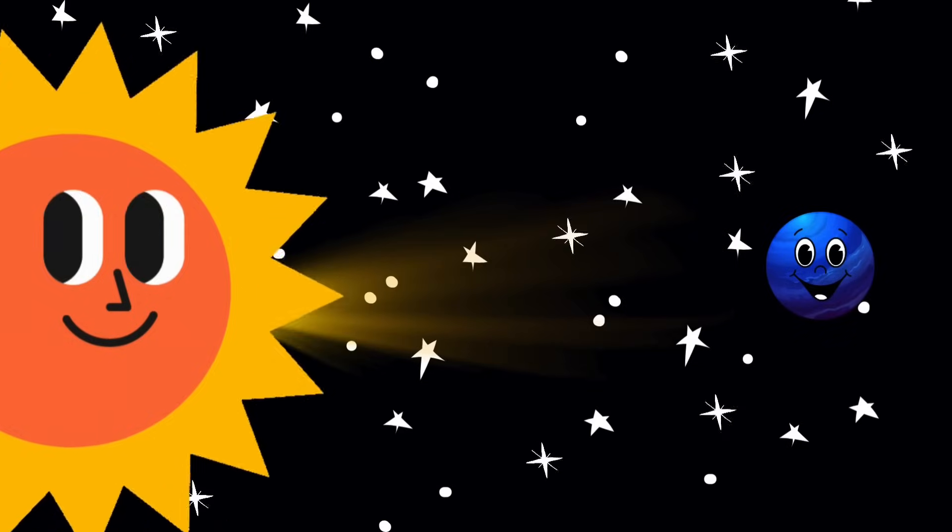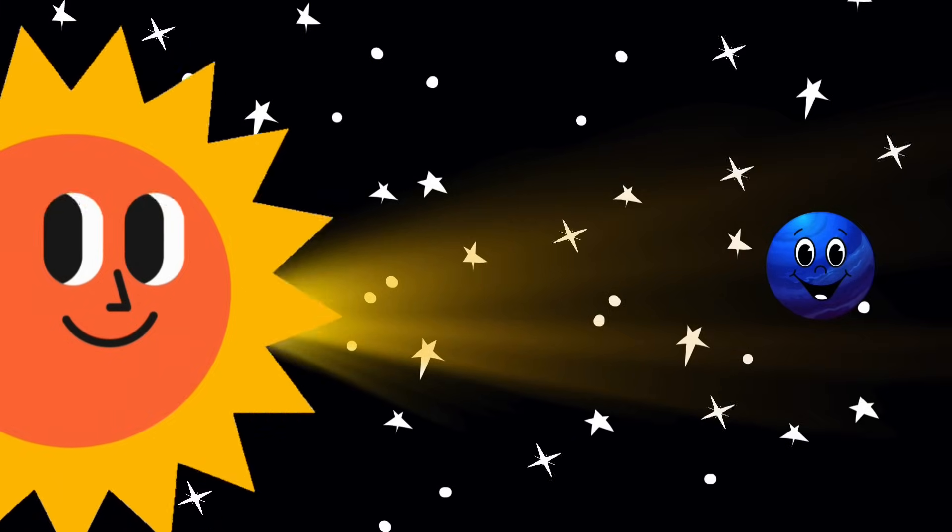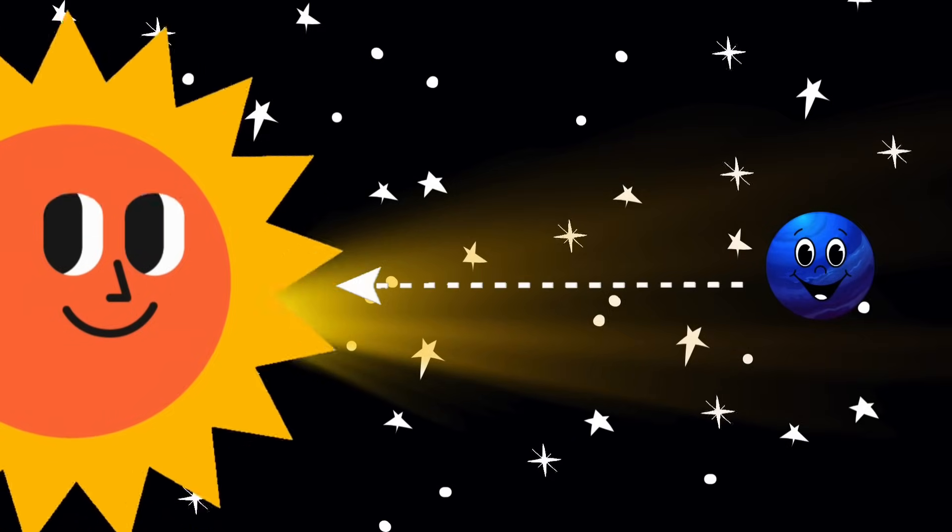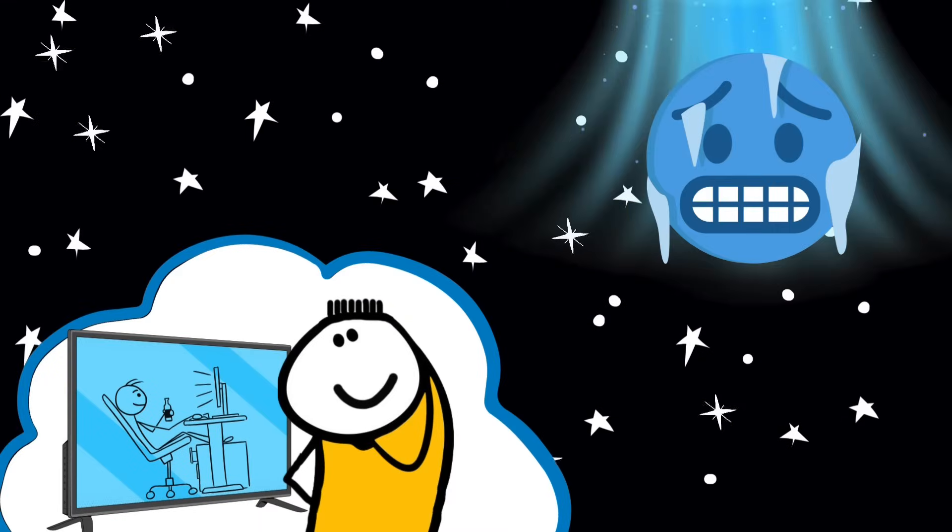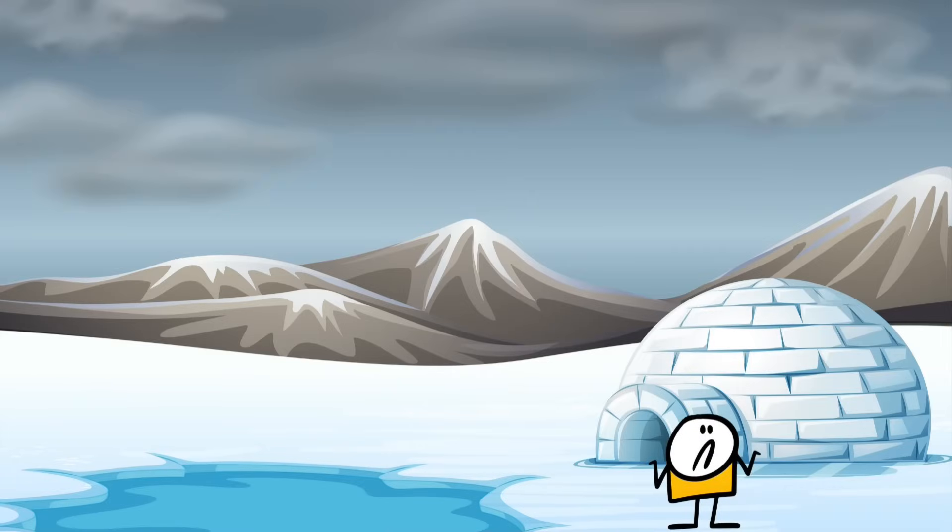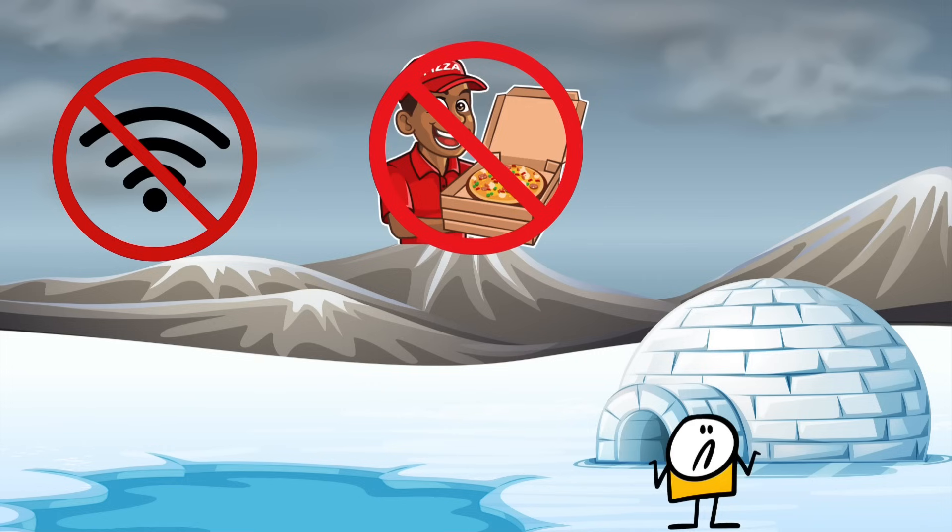Neptune is so far from the sun that sunlight takes four hours to reach it. Four hours. You could binge watch a whole season of your favorite show while Neptune is just catching a little bit of that weak solar glow. It's like living in Antarctica, in the dark, during a blizzard with no Wi-Fi, no pizza delivery, and the sun shows up four hours late with decaf.